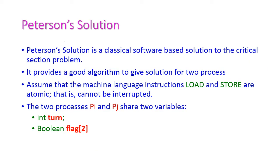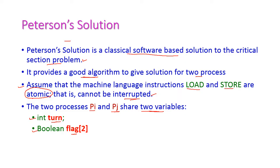The Peterson solution is a classical software-based solution to the critical section problem, and this gives a very good algorithm for two processes. Here, assume the two machine language instructions — load and store — and these two are atomic, meaning these two instructions cannot execute simultaneously and cannot be interrupted. Let us assume two processes, pi and pj, and these two processes share two variables: first is 'turn', which is of type integer, and second is 'flag', which is of type boolean. Flag is an array variable, and the array size indicates the number of processes.